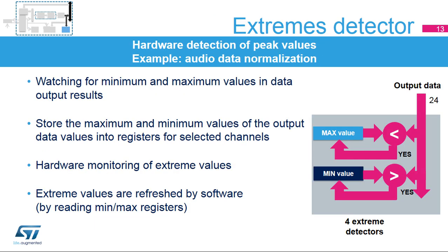The extremes detector monitors output results and stores extreme values into minimum and maximum registers along with the associated channel number. Monitoring for extremes is only performed on selected channels to ensure channels do not mix different input levels. Stored extreme values are refreshed each time the values are read from the register.